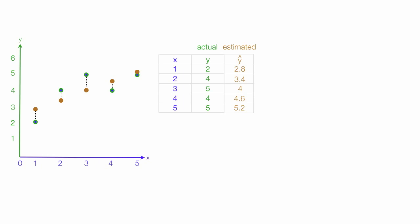The green column is the actual value and the brown column is the estimated value. The standard error of the estimate, the formula, is the estimated value minus the actual value squared. Add all those up. Divided by n minus 2. And n is the number of observations. Then take the square root of all this.